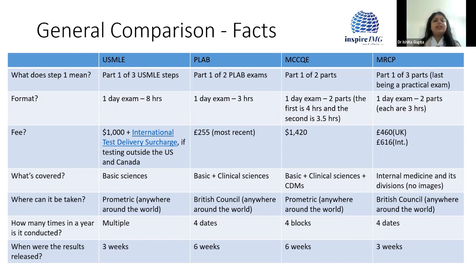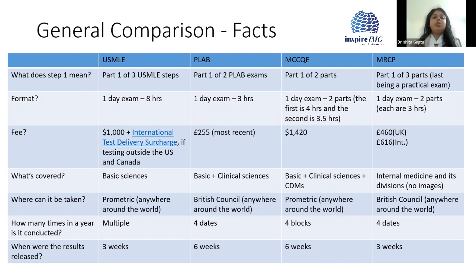Regarding what's covered: USMLE step one focuses on basic sciences. PLAB part one, being the first of just a two-part exam with the second being practical, covers both basic and clinical sciences. QE1 similarly covers both basic and clinical sciences, plus something called CDMs or clinical decision makings, which we'll discuss in subsequent slides. MRCP is specifically a board exam for internal medicine and its subspecialties, including dermatology and psychiatry since those residents also take MRCP. A key difference is that MRCP part one has no images or photos, whereas part two does.